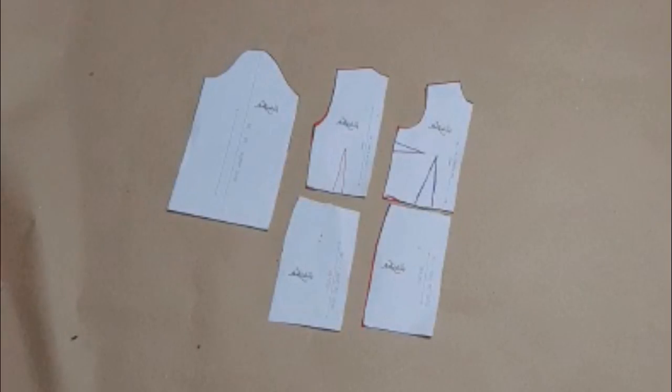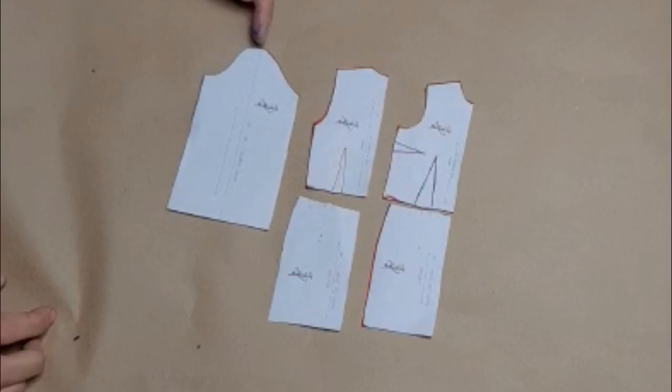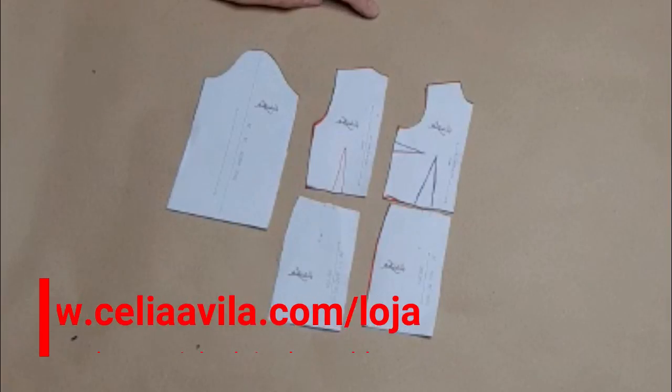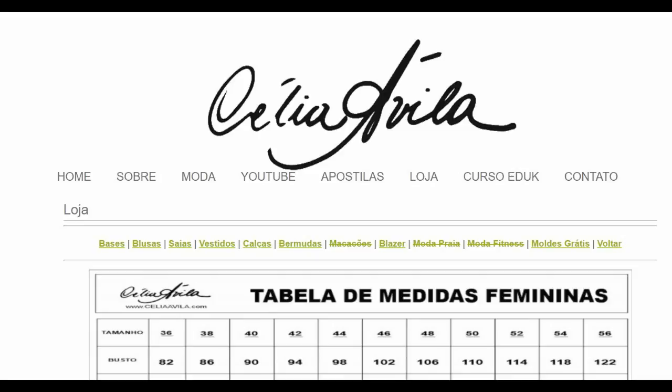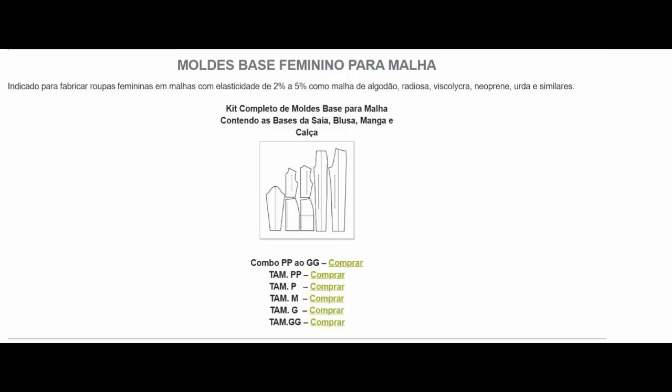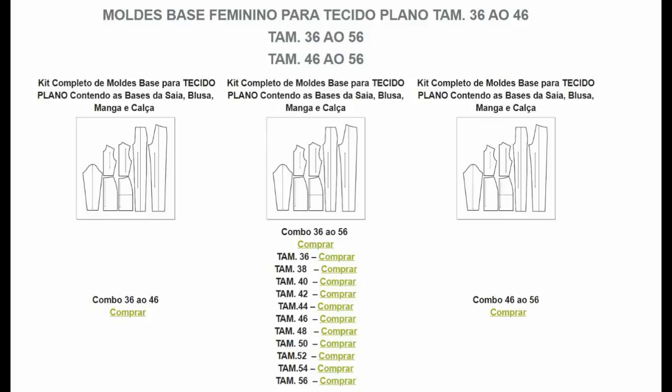To make the interpretation of this model, I'll need the front and back bodice base, front and back skirt base, and the sleeve base. Here on my channel I teach how to make all these bases custom-measured. I'm leaving the link to watch the playlist where I teach the bases, and in the video description, the link to my site post with complementary tables and the mini workbook where I teach the bases. On my site celiaavila.com.br you'll find industrial bases available for purchase for woven fabric, knit, and lycra. Use coupon celiaavila for 5% off on complete kits.